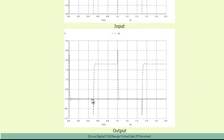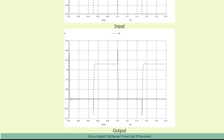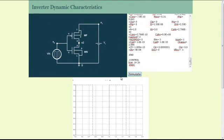It takes a rise time for the output of the inverter to rise from the low state to the high state, and similarly it takes a fall time for the output voltage to switch from the high state to the low state. We can measure this rise time and fall time by appropriately magnifying the output characteristic curve. For example, in order to measure the rise time, let us magnify the output waveform for a time between 0.4 nanoseconds to 0.6 nanoseconds. This can be done by modifying the tran command as follows.